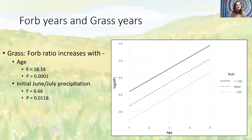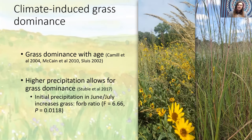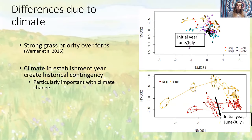The grass-to-forb ratio increased with restoration age, as well as with increased precipitation in June and July of the establishment year. Grass dominance as restorations age is a relatively common phenomenon, and high grass cover typically results in lower overall diversity and richness. In our plots, higher precipitation in establishment years increased the grass-to-forb ratio. Other restoration studies have found similar findings that grasses benefit from wetter conditions in the establishment year, while forbs capitalize in drier establishment conditions. When grasses establish first over forbs, they have a strong priority effect that creates a historical contingency dependent on climate in the establishment year, with wet years experiencing a higher grass-to-forb ratio.